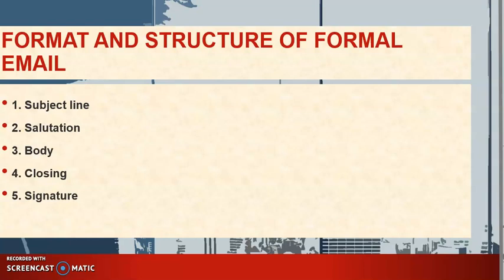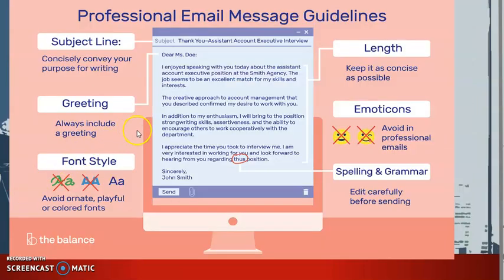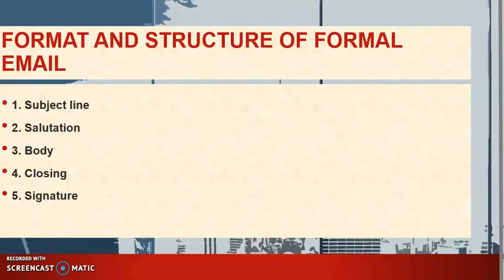The first element is the subject line. This is a short phrase that summarizes the reason for your message or the goal of your communication. It is important to include a subject line when sending a professional email so your audience knows exactly what to expect and is able to locate the message easily if needed. The subject line should be short and written with relevant words so the receiver will read the email.